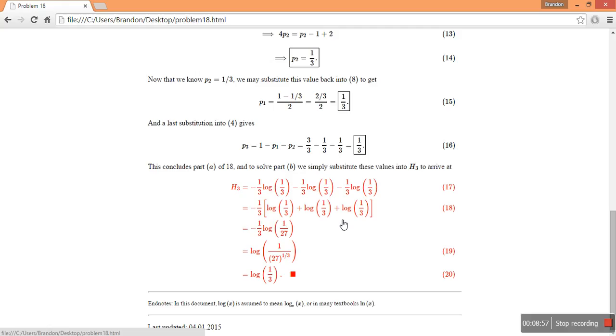So in 17, I've just thrown in all of our p sub 1, p sub 2, p sub 3s, which are all the same, 1 thirds. And then I pulled the 1 third out in 18.